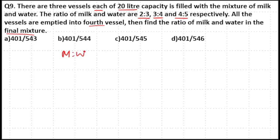We have milk and water in the ratio: in the first vessel it is 2 is to 3, in the second vessel it is 3 is to 4, and in the third vessel it is 4 is to 5. Now 2 plus 3 equals 5, 3 plus 4 equals 7, and 4 plus 5 equals 9.